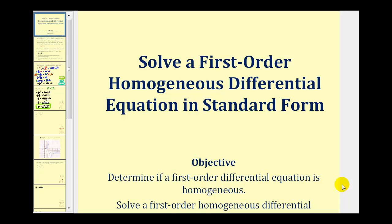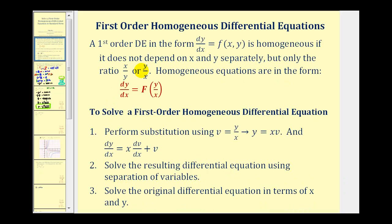Welcome back to part two of solving a first order homogeneous differential equation written in standard form. To review, a first order DE in the form dy/dx equals f of x, y is homogeneous if it does not depend on x and y separately, but on the ratio of y to x or x to y.